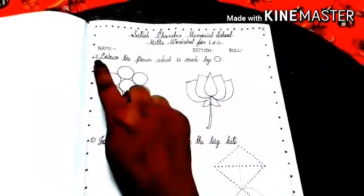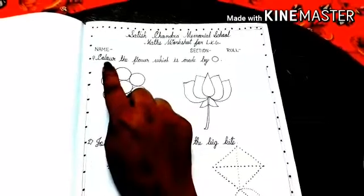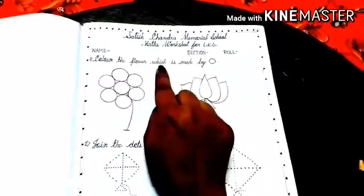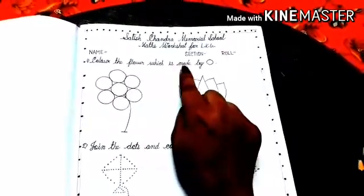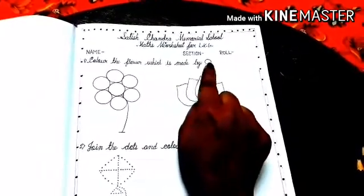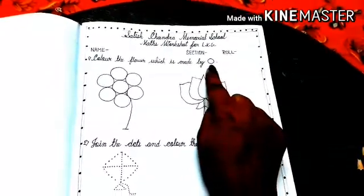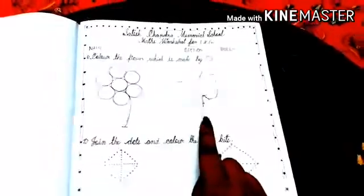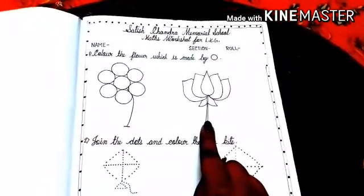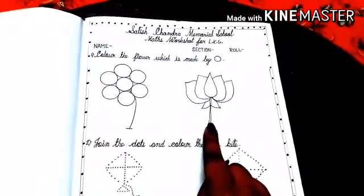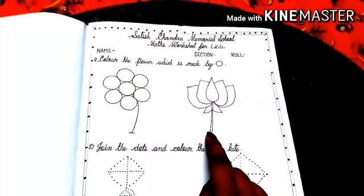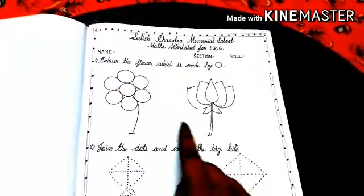Okay, now number one. Color the flower which is made by circle. Okay children? You can see that two flowers are here. How many flowers? Two flowers. We have to color the flower which is made by circle.